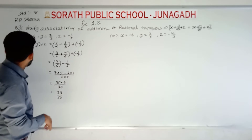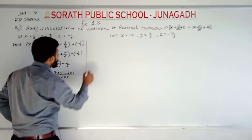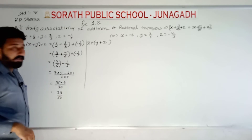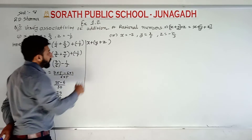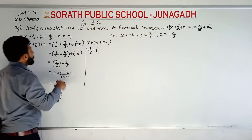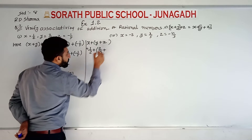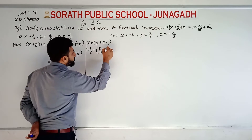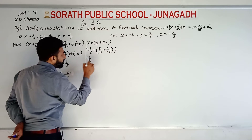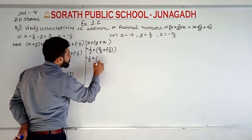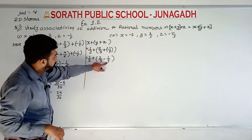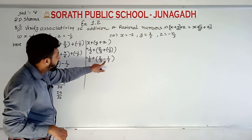Now let me check the second condition: x plus y plus z. So x is as it is, 1/2. y plus z is equal to 2/3 plus minus 1 upon 5. So 1/2 as it is, plus now computing 2/3 plus minus 1 upon 5 using cross multiplication: 5 multiplied by 2, 3 multiplied by 1, and denominator is 3 multiplied by 5.